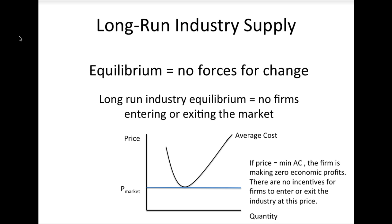By process of elimination, we have arrived at the condition which characterizes long-run industry equilibrium. If the market price is just equal to the minimum of average costs, then firms are making zero economic profits. At this price, they are just covering all their opportunity costs of doing business, which means they are doing just as well in this industry as in any other industry. Thus, there are no incentives for any firm to enter or leave the industry, which is the condition that characterizes long-run equilibrium.